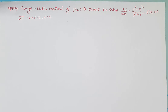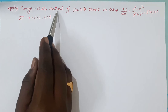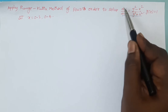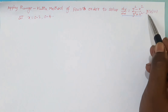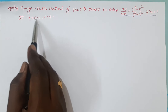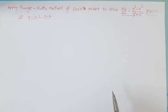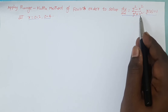See the statement of the given problem. Apply the Runge-Kutta method of 4th order to solve dy/dx = (y² - x²) / (y² + x²), with the initial condition y(0) = 1, at the points x = 0.2 and 0.4. So we have to find out the values of y at 0.2 and y at 0.4 using this initial value problem.